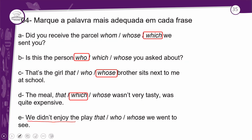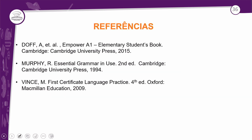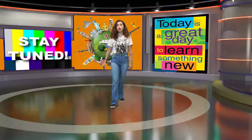Item E: 'We didn't enjoy the play ___ we went to see.' We're talking about 'the play' — a thing, not a person, and not possession. The options are 'that' and 'whose.' You won't use 'whose' because there's no possession. In this case, the only alternative is 'that,' which can be used here because it's a Defined Clause — a restrictive clause.